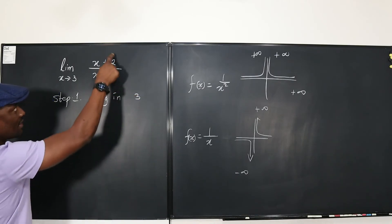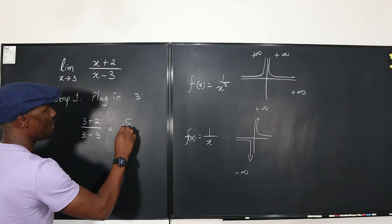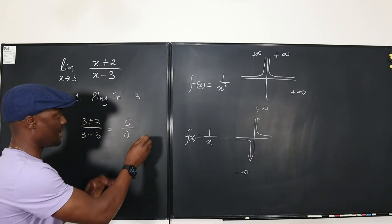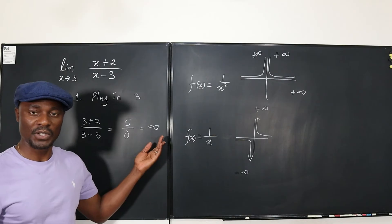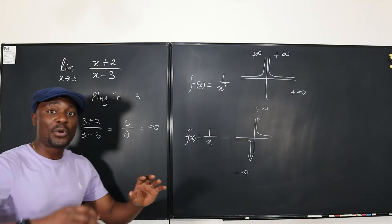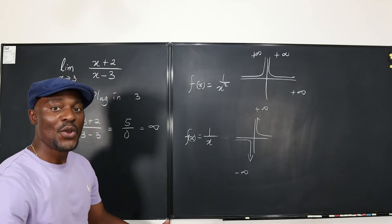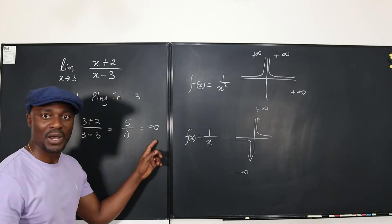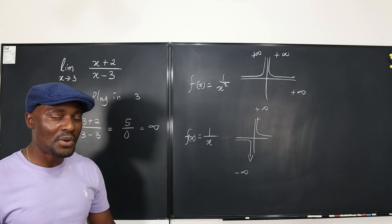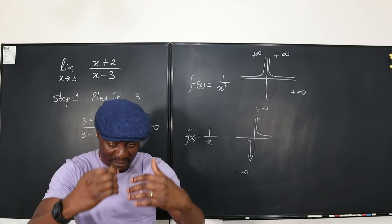If I plug in 3, this expression becomes (3 + 2) divided by (3 − 3), which gives me 5 over 0. Remember that 5 divided by 0 goes to infinity. Most students will jump to the conclusion and say it's infinity because you're dividing by zero. We know the problem has to do with infinity, but we don't know if the infinity is going to be positive or negative in both directions. We have to investigate.